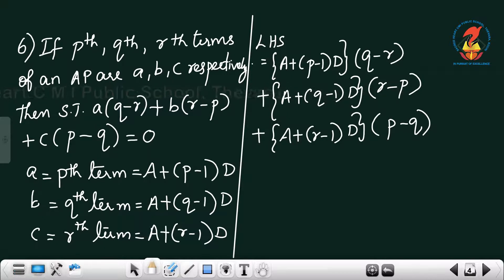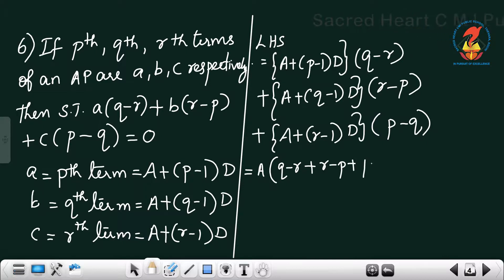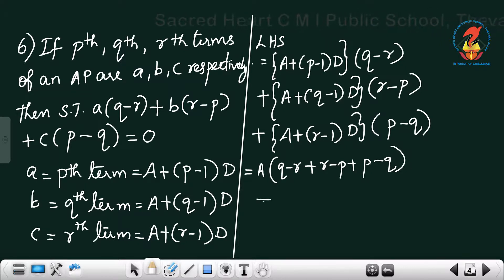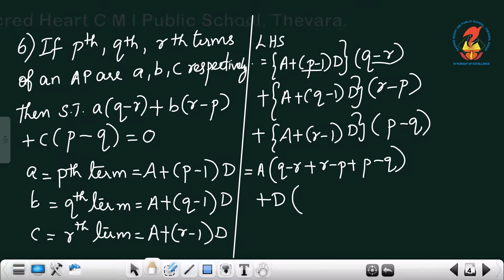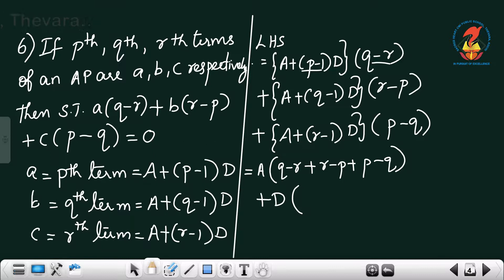Expanding the A terms: A(q minus r) plus A(r minus p) plus A(p minus q). Taking A out gives A times [(q minus r) plus (r minus p) plus (p minus q)], which equals zero. For the d terms, taking d out: d times [(p minus 1)(q minus r) plus (q minus 1)(r minus p) plus (r minus 1)(p minus q)].